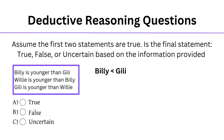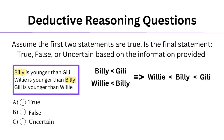Billy is younger than Gilly. The second: Willie is younger than Billy. Now, immediately, we see a connection between these statements — both mention Billy. This is the first thing to look for in these types of questions, as it helps us connect the information. So connecting the two statements, we get Willie, Billy, and Gilly.